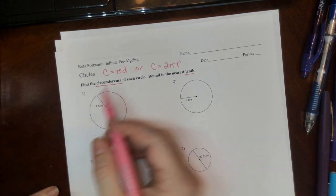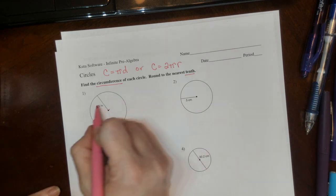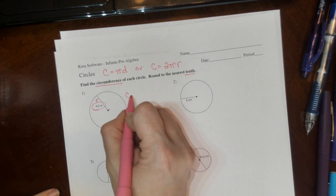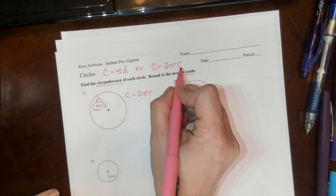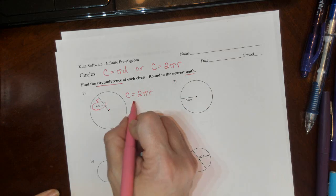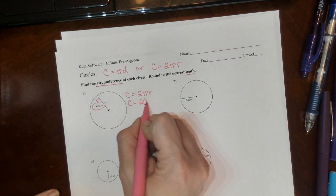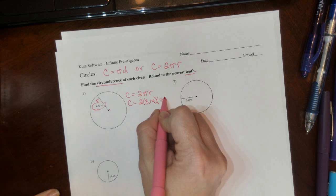In this case, we have a radius going from the center to the edge, so this is r. We'll use 2πr. So we have 2 times pi—that's 3.14—and our radius is 4.5.